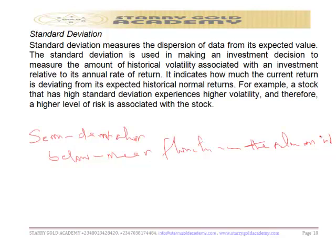Unlike standard deviation, semi-deviation looks only at the negative price fluctuation — those returns that fall below the mean. Since those below the mean are negative, semi-deviation is most often used to evaluate the downside risk of an investment.